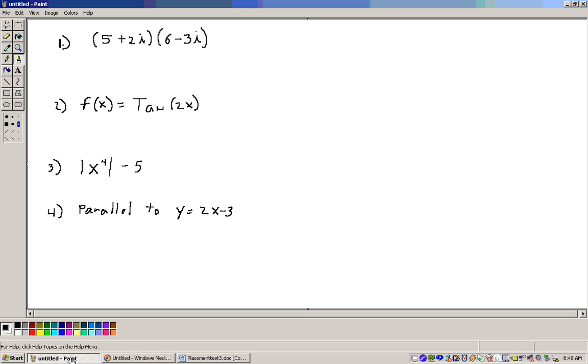And I have the problems written up here. So we foil these together. We'll take the 5 times the 6 and get, let me just go over here to write this down, gives me 30. And then this is 5 times a minus 3i, which is minus 15i. Now go to your inner. Let's see, we got a plus 12i, and we have a minus 6i squared.